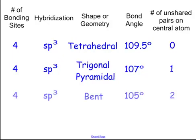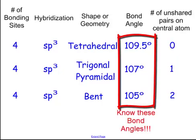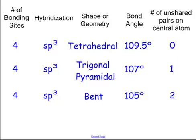Now, we also have, when we have two unshared pairs, and we call that bent. And look what happened to the bond angle. The bond angle went down again. It went down to 105 degrees. Now guys, 109.5, 107, 105, these are three bond angles you need to know. You need to know these bond angles. These three are very, very important. So make sure you get them down, know them for tetrahedral, trigonal pyramidal, and bent.